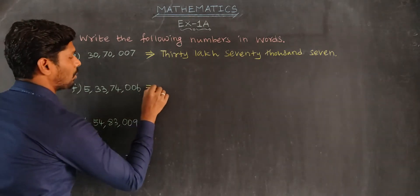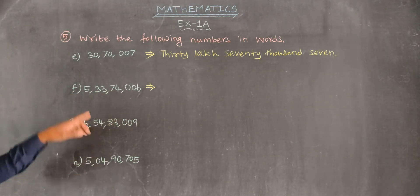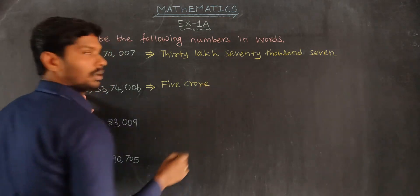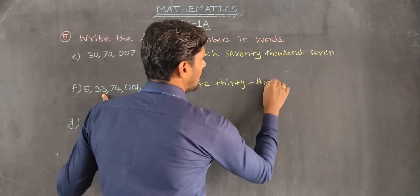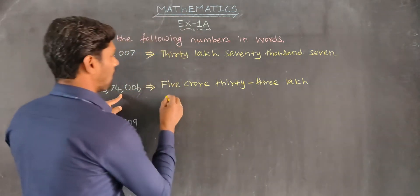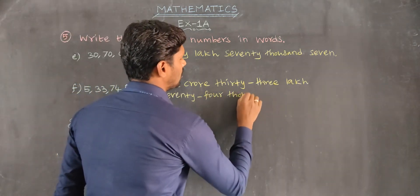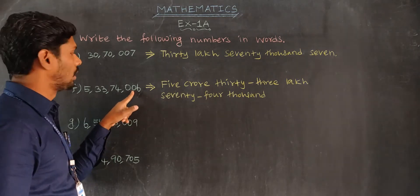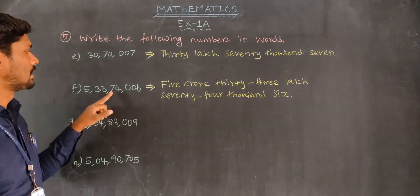Next number. Place values: ones, ten, hundred, thousand, ten thousand, lakh, ten lakh, crore. Five crores, thirty-three lakh, seventy-four thousand. Hundred value zero, tens value zero, six. Five crore thirty-three lakh seventy-four thousand six.